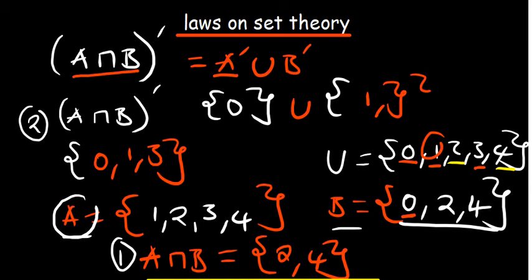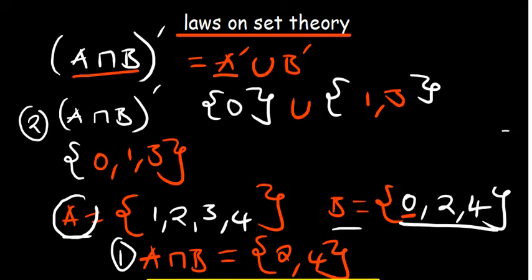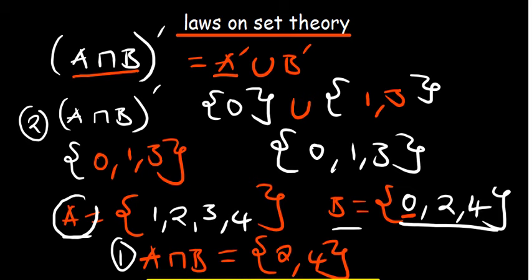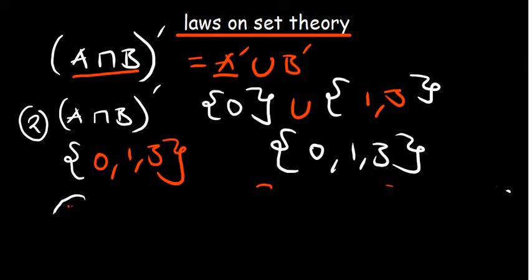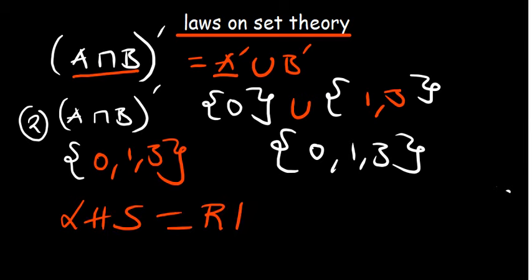Now we find the union of A complement and B complement. Union means combining the two sets. So {0} union {1, 3} gives us {0, 1, 3}. The left-hand side and the right-hand side are one and the same, so we can therefore conclude that the left-hand side is equivalent to the right-hand side — hence confirmed.